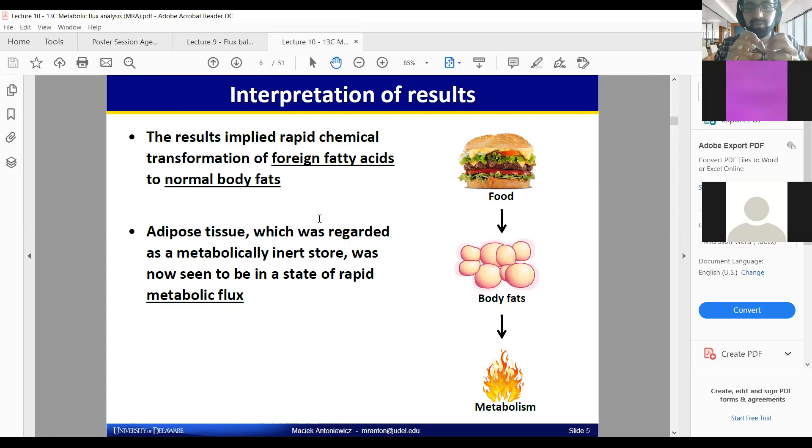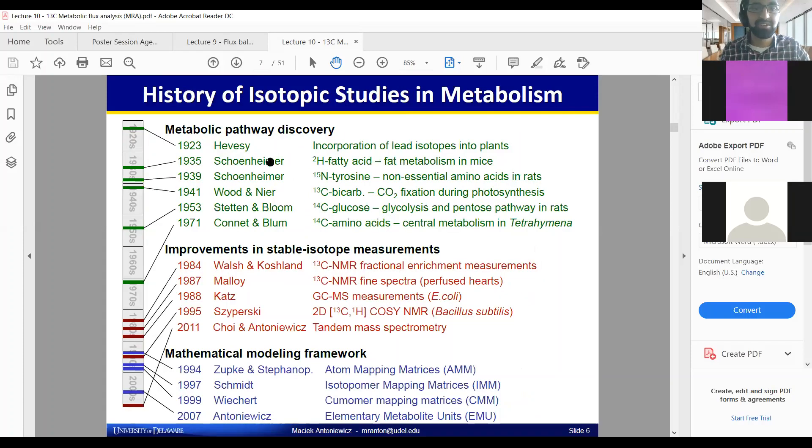Understanding what about these atomic perturbations, where now instead of a 12 carbon it's still glucose but it's a 13 carbon. Is that actually going to be processed by the cell? These were the first experiments that really said yes.